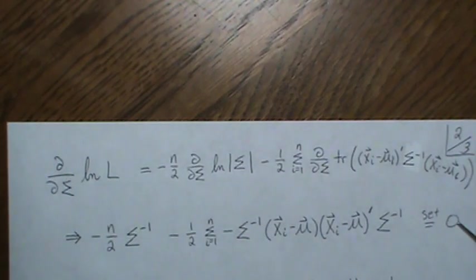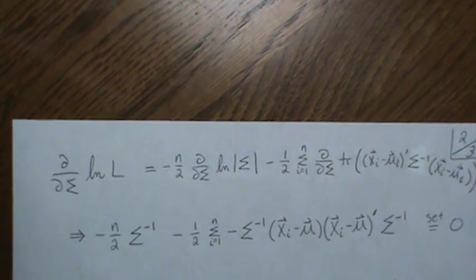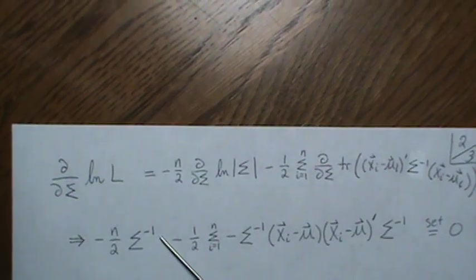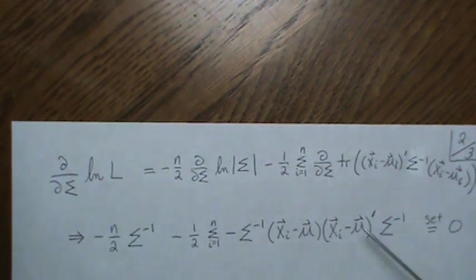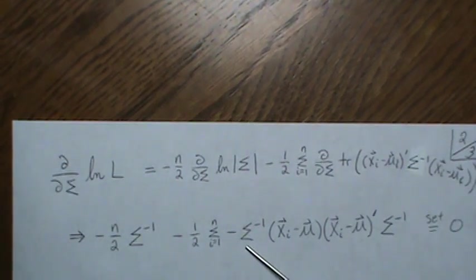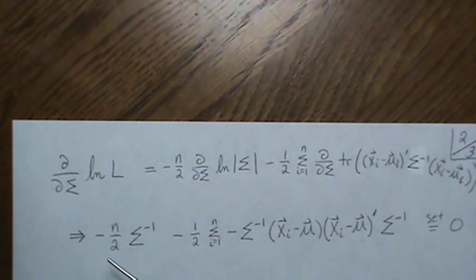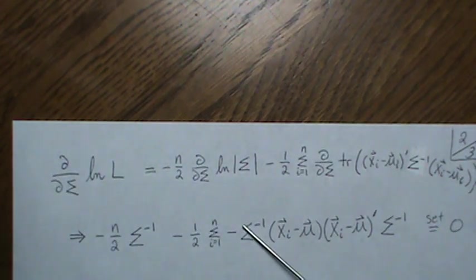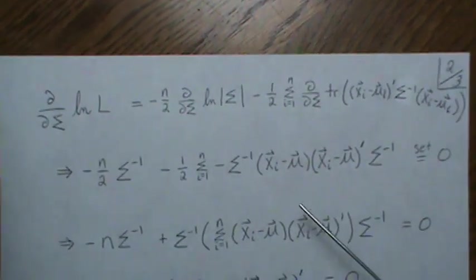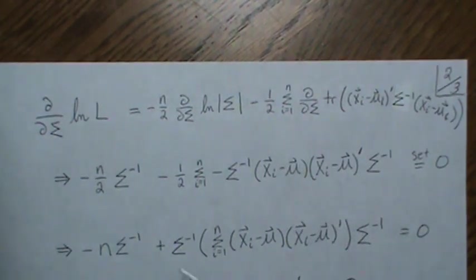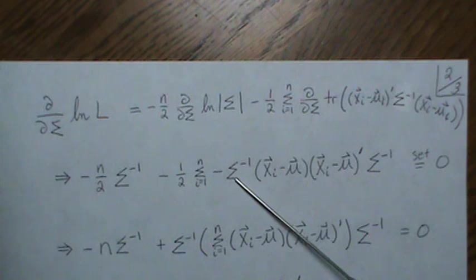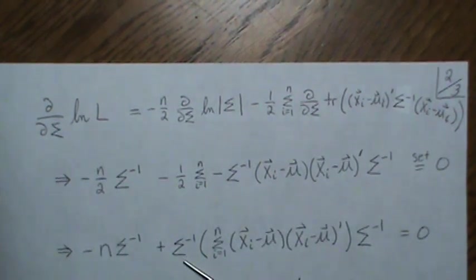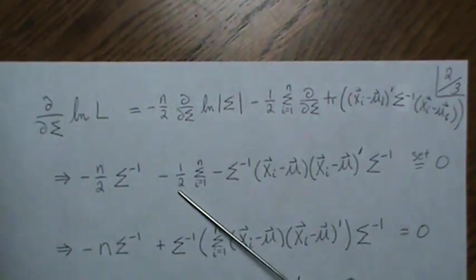Now we set it equal to zero and solve for sigma. Here we post-multiply everything by sigma, so that goes away and this goes away. Then we pre-multiply by sigma, so we get sigma here and then that goes away. So we're left, so I do one more step.